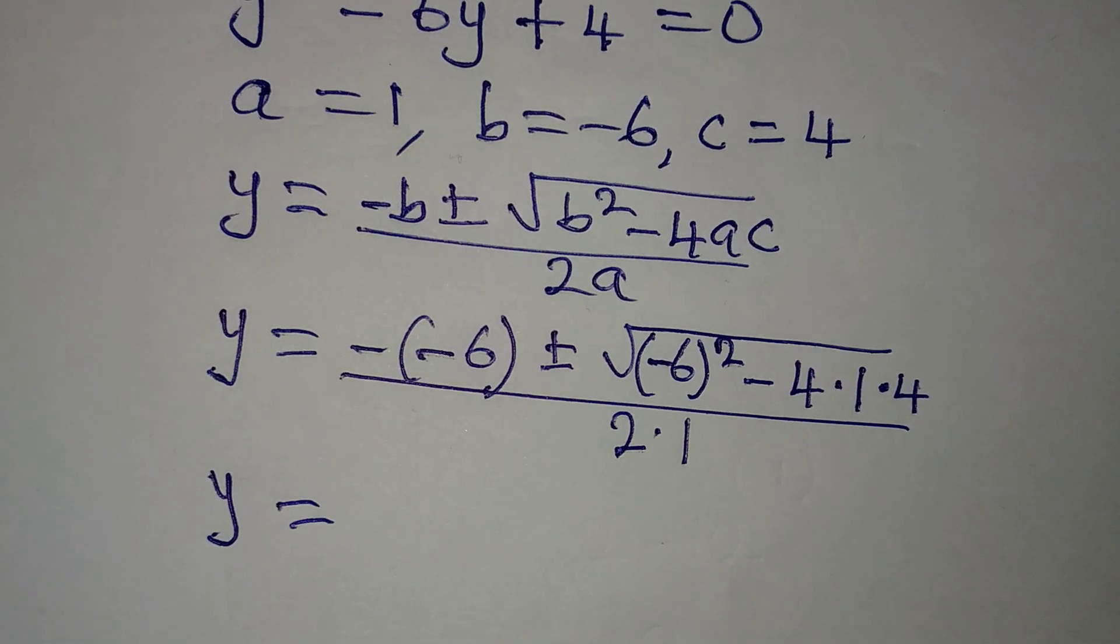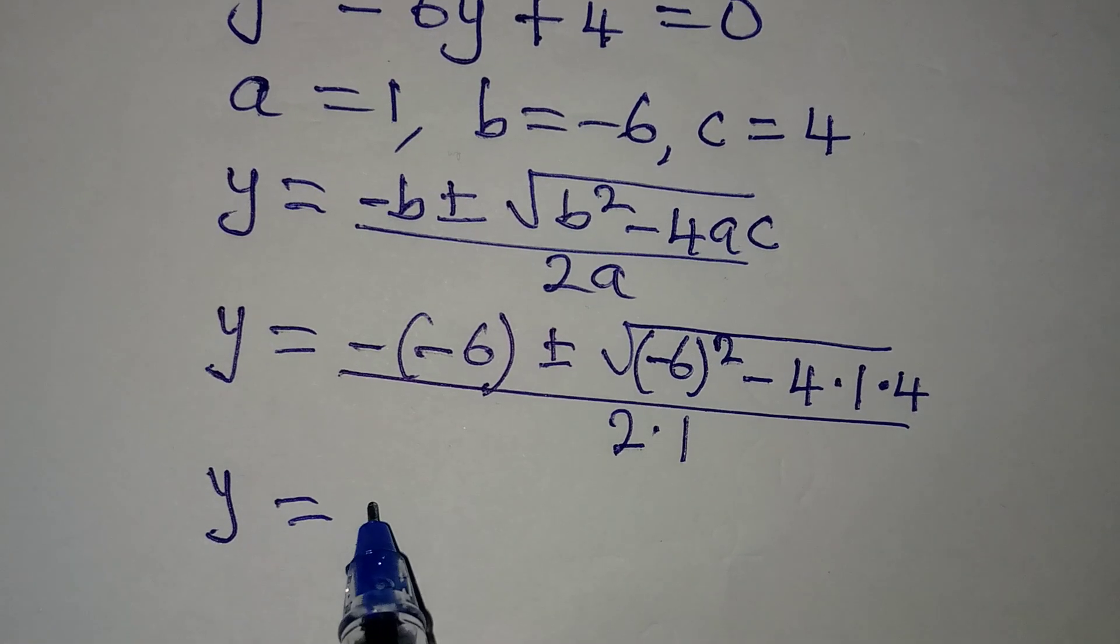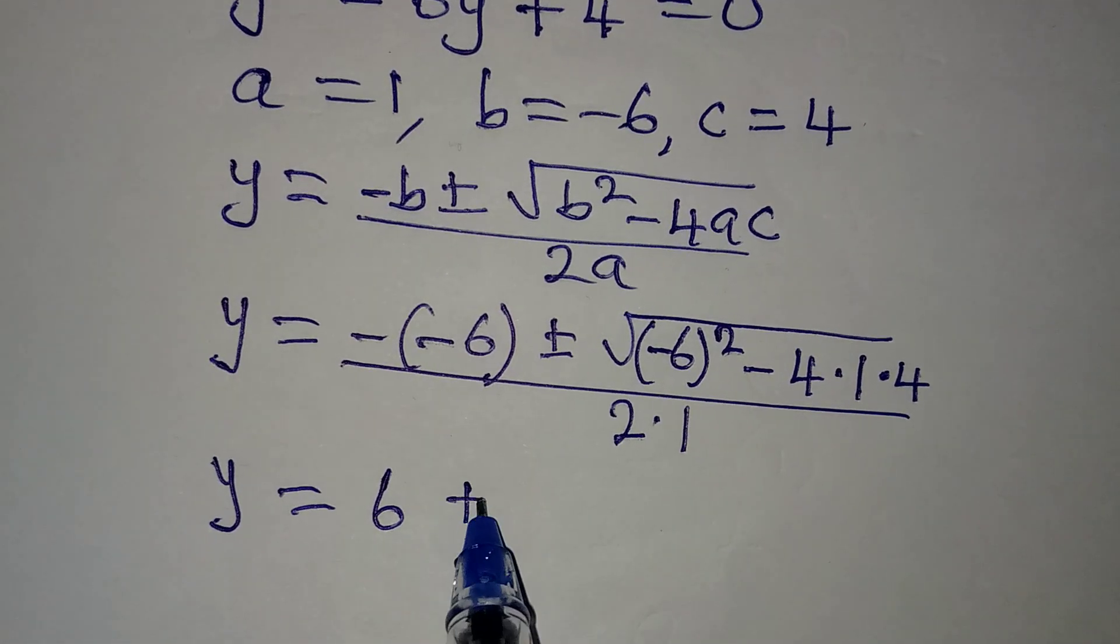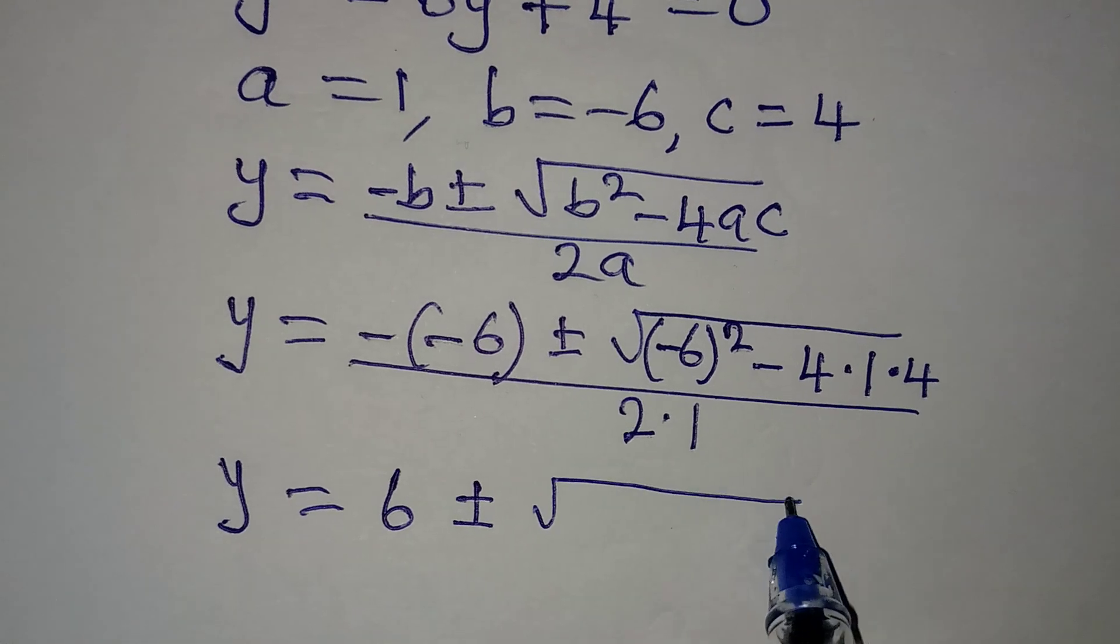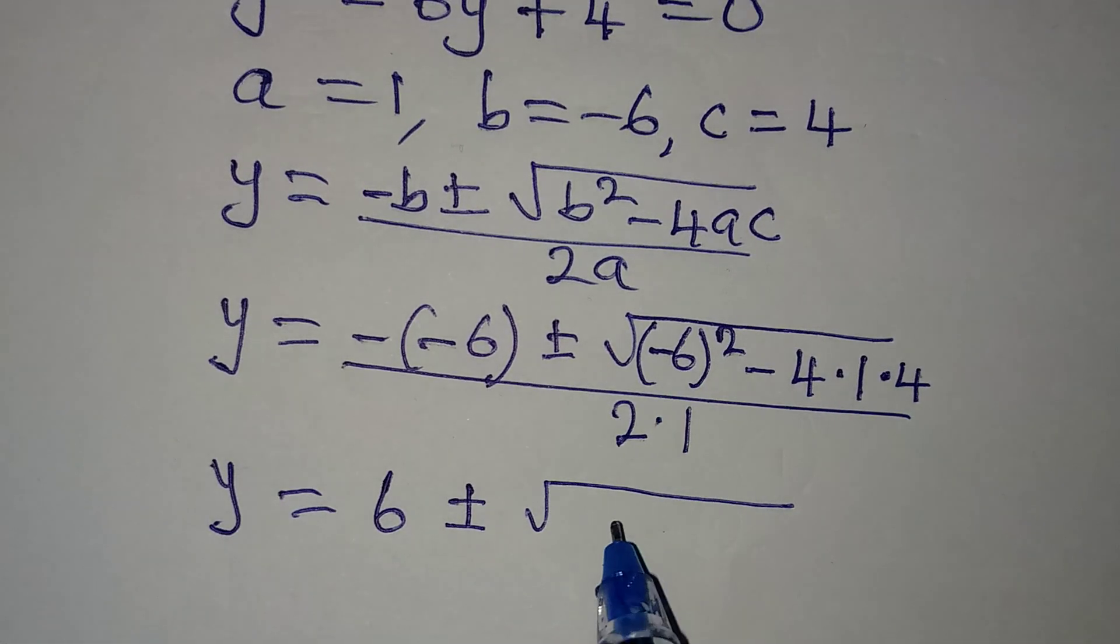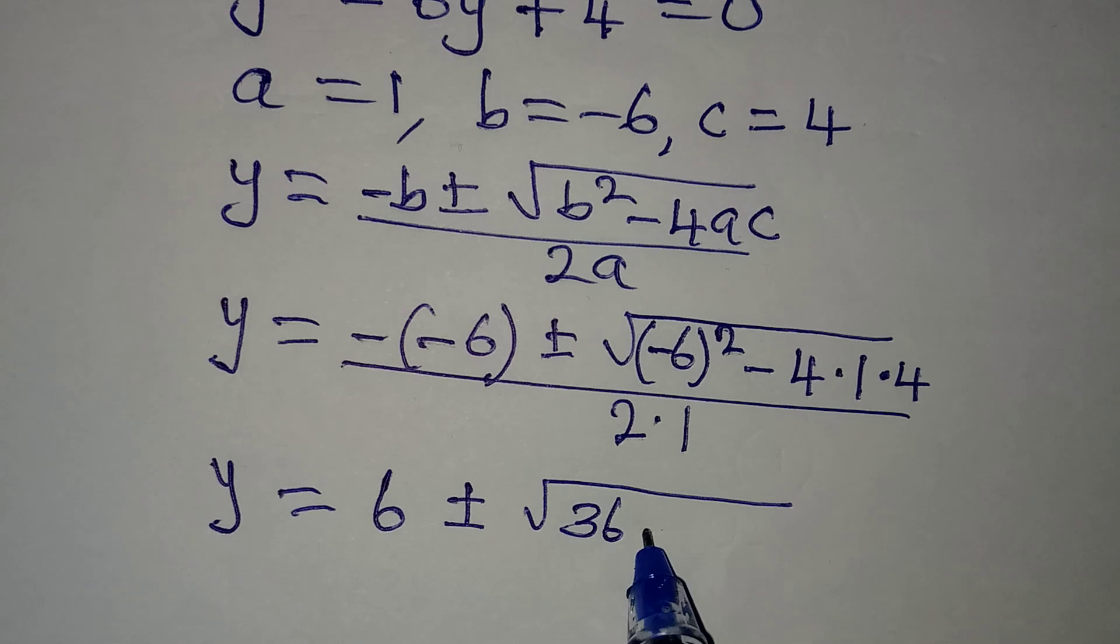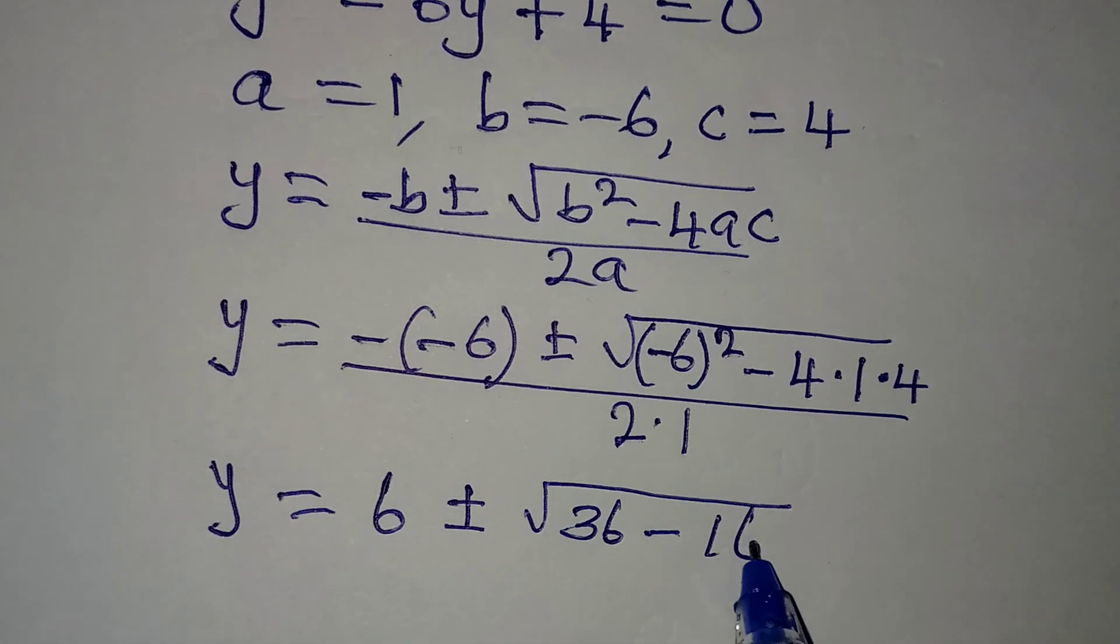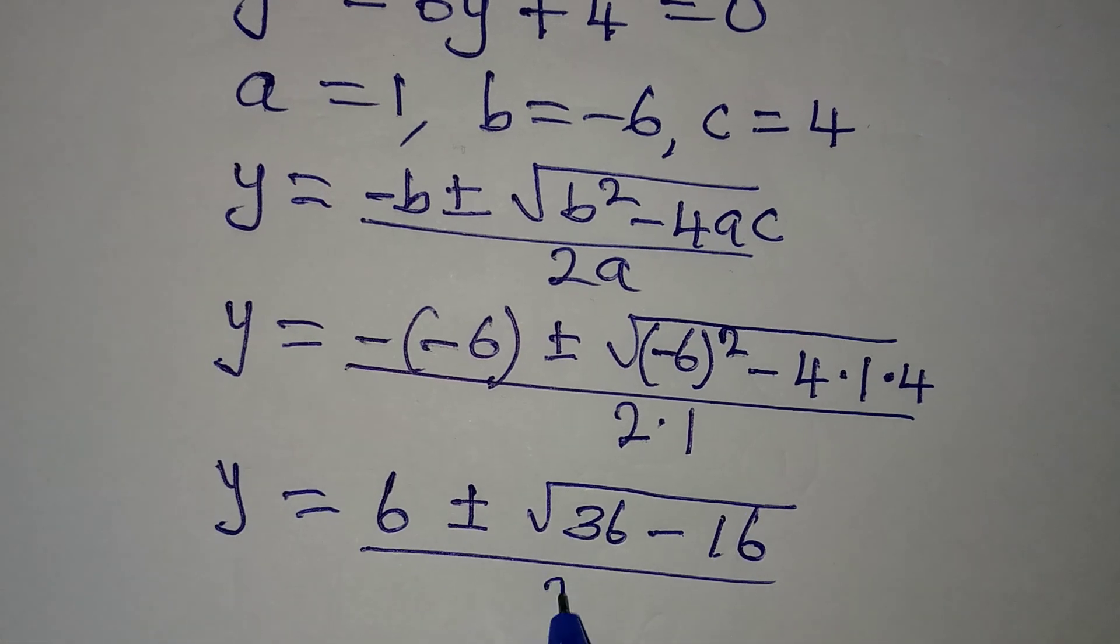y now will be equal to 6, because negative negative will give positive, then ± √(36 - 16), and the whole of this is over 2.